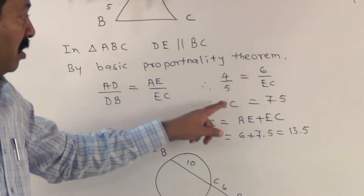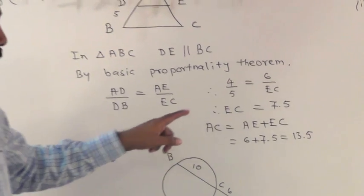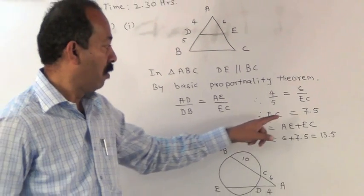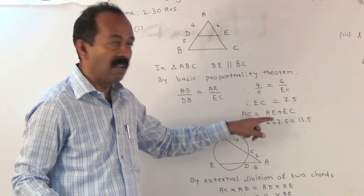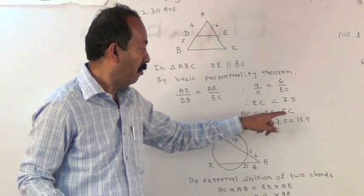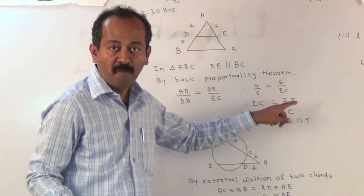Now, substituting the values we get 4 upon 5 is equal to 6 upon EC. So, value of EC is 7.5. So, we have to find out length of AC. So, AC is equal to AE plus EC. So, AE is 6, EC is 7.5. After adding it, we get AC is equal to 13.5.